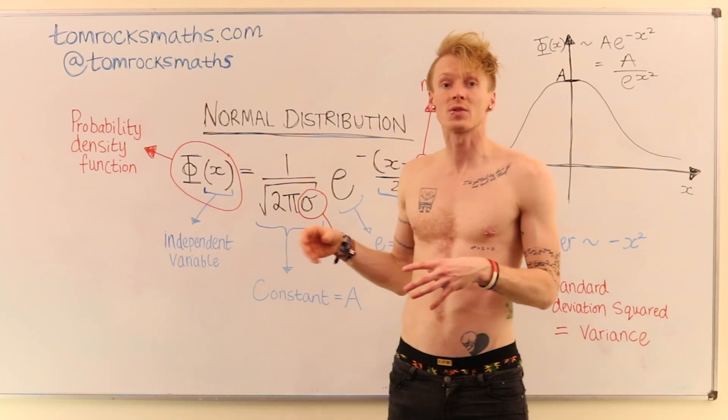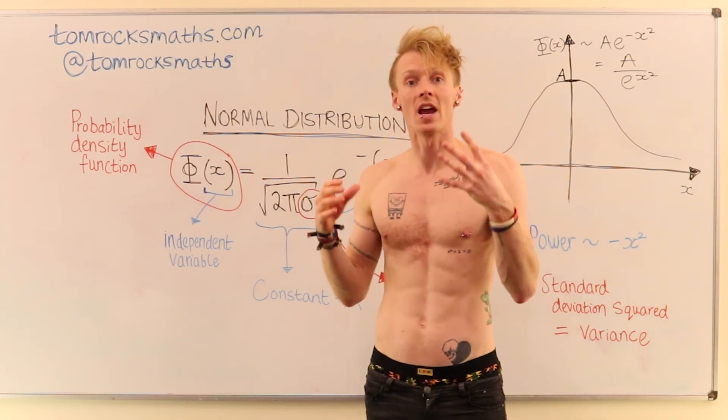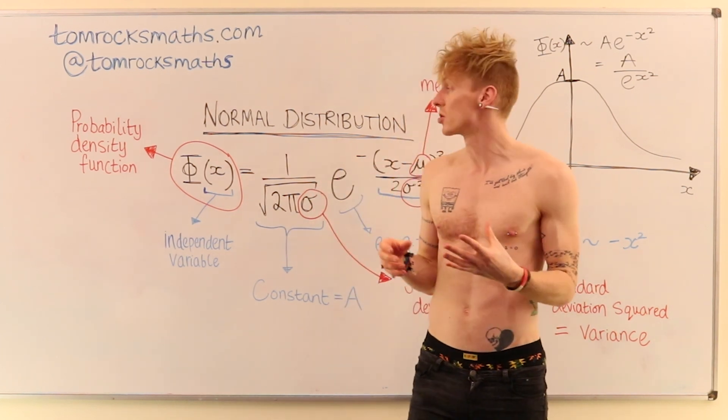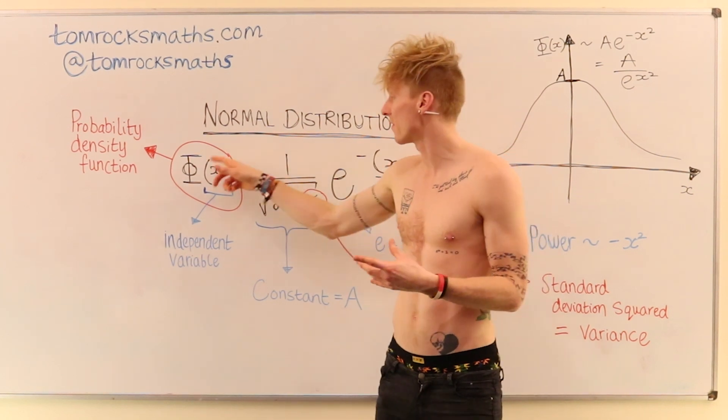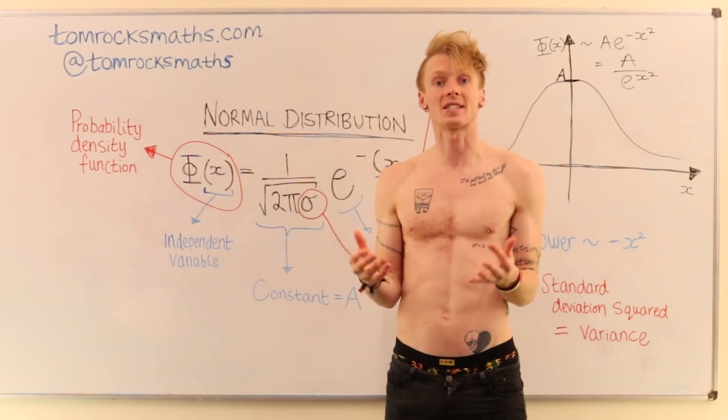we have phi of x, which is our probability density function. And this tells you the probability of finding the value x in your set of data.